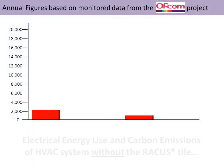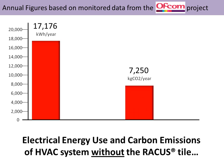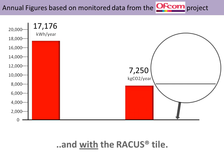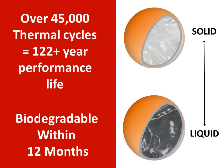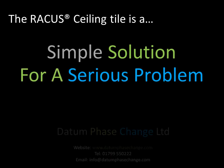The RACUS ceiling tile competes on price with existing metal ceiling or mineral fibre tiles that are on the market today, with the added advantage that they can be utilised in ceiling grids that are already installed, will minimise disruption to the building occupants, and will instantly provide electrical energy and CO2 savings. They also have a payback period unlike standard ceiling tiles and have a proven life performance equivalent to over 122 years. The RACUS ceiling tile is a simple solution for a serious problem.